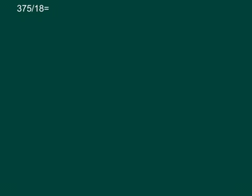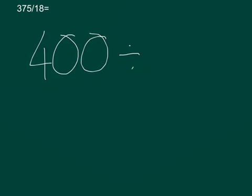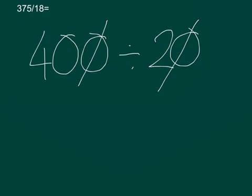How can we estimate what 375 divided by 18 will be? There are lots of different ways. One way is to round the numbers to numbers that are close by but are easier to work with. For example, 375 is close to 400 and 18 is close to 20. 400 divided by 20 is a simpler sum because you'll still get the same answer if you do 40 divided by 2. 40 divided by 2 is 20, so we know our answer of 375 divided by 18 will be close enough to 20.